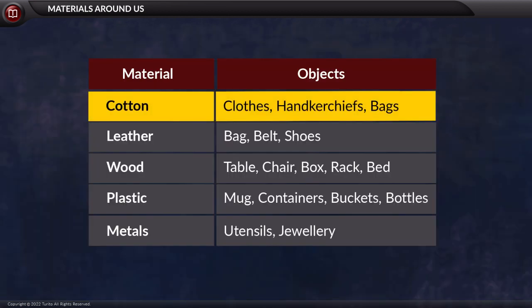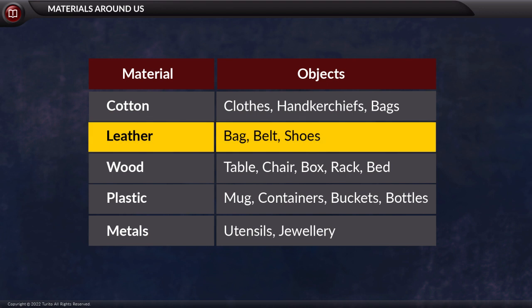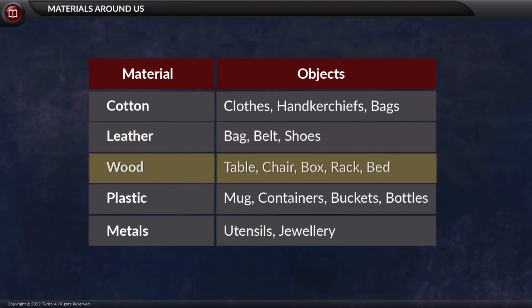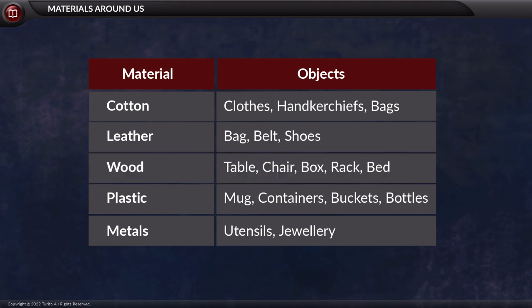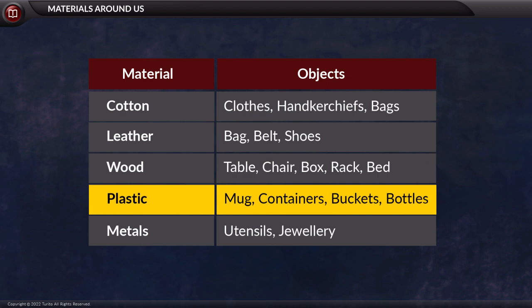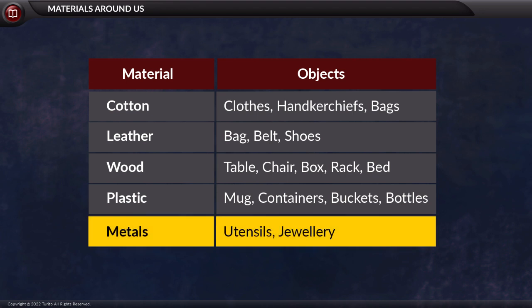As you can see from the table, clothes and handkerchiefs are made of cotton; bags can be made of leather as well. Belt and shoes are made of leather. Table, chair, box, rack, and bed are made of wood. Mug, containers, buckets, and bottles are made of plastic. Utensils and jewelry are made of metals.